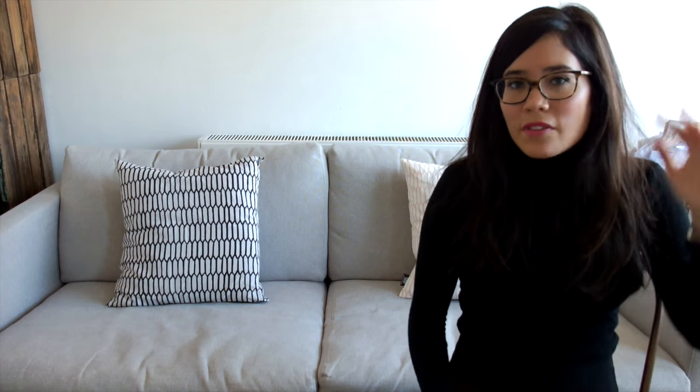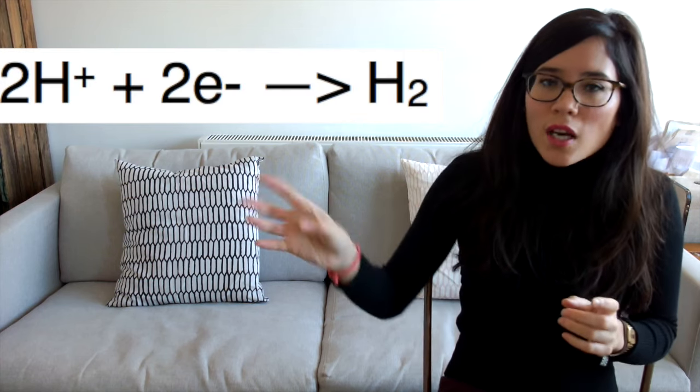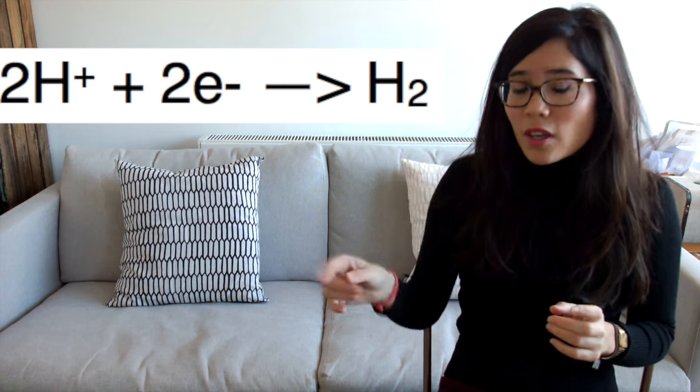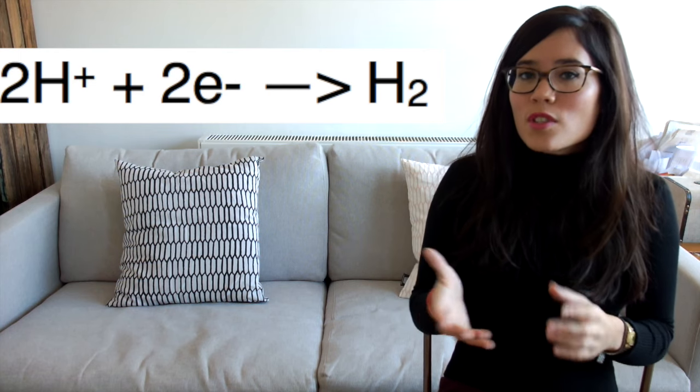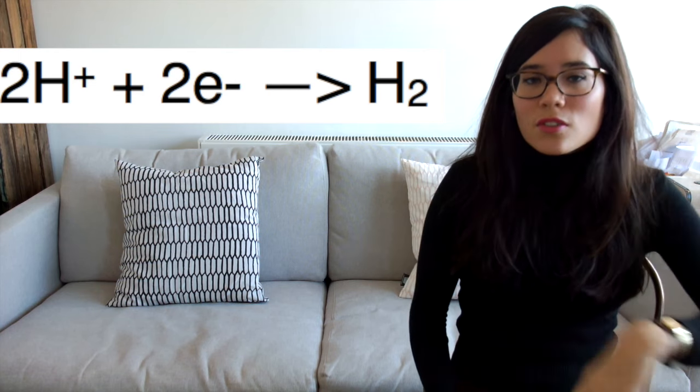What do you need to do to get from H+ to the gas? We've got to get rid of that positive charge, and how we do that is by adding an electron, because an electron is negative. So if you have H+ plus an electron, then you're going to produce hydrogen. However, because there are two hydrogens which are produced, you need two electrons and two hydrogen ions.